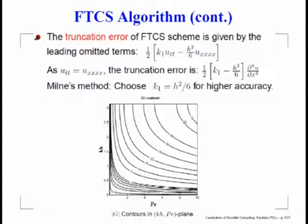We also note an interesting aspect: the leading truncation error from the time derivative is (k₁/2)·u_tt, and from space discretization is (h²/12)·u_xxxx. Since u_t = u_xx, we can show u_tt = u_xxxx, so these two quantities are essentially the same. Factoring out, we get a quantity (k₁ − h²/6) inside. If we choose k₁ = h²/6, this leading truncation error term vanishes — this method was suggested by Milne.